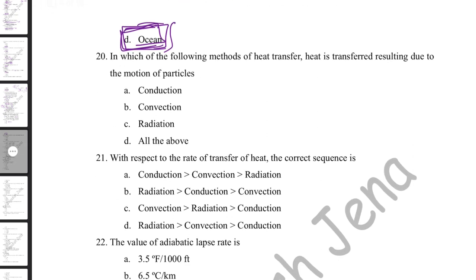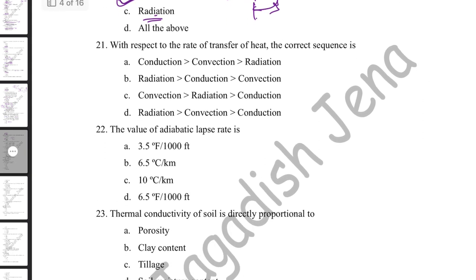In which heat transfer method is heat transferred due to motion of particles? In conduction, heat transfers by particle-to-particle contact. In convection, heated particles move upward and cooler particles descend. The answer is convection. In radiation, no medium or particle movement is required, and it is the fastest heat transfer method. The correct sequence by rate is: radiation > convection > conduction.